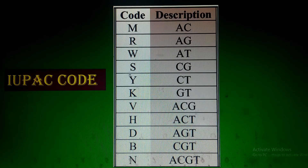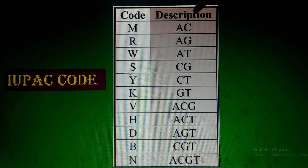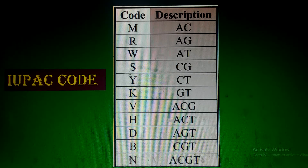Here I am sharing some IUPAC codes for creating your degenerate primers. M stands for A and C. R stands for A and G (adenine and guanine). W stands for adenine and thymine. S stands for cytosine and guanine. Please note all these codes if you want to generate your own degenerate primers.